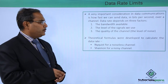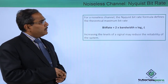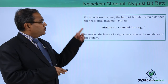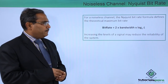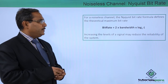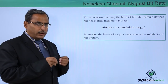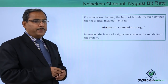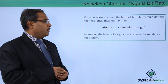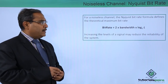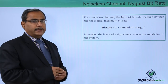The Nyquist bit rate formula gives the theoretical maximum bit rate for a noiseless channel — that is, what is the maximum bit rate possible. The formula is: Bit Rate = 2 × Bandwidth × log₂(L), where L is the number of signal levels, and this decides the bit rate.